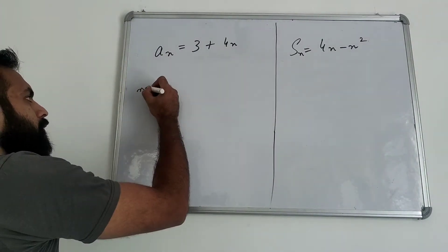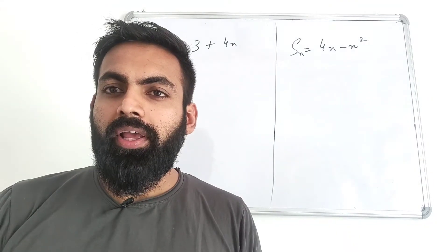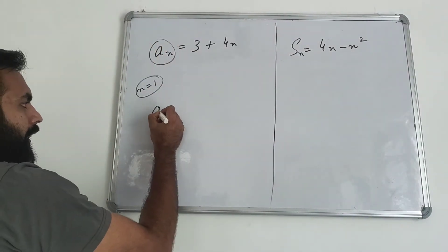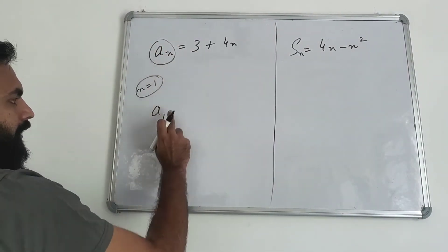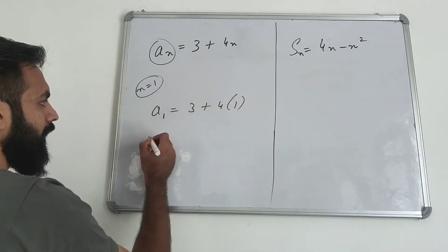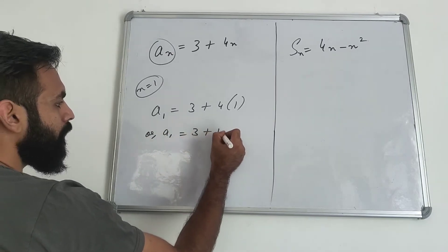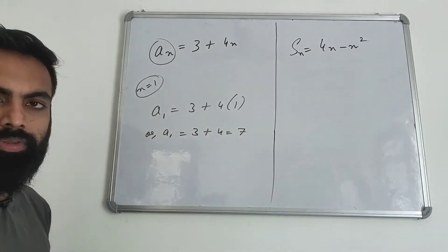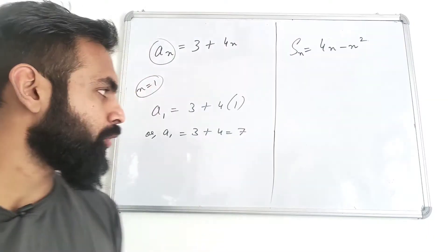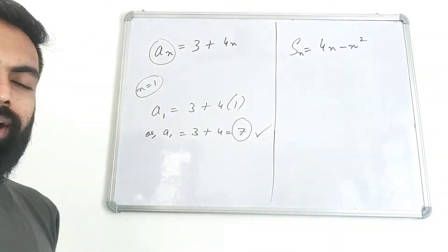You will put n value 1. If you put n value 1, you get A1 equals 3 plus 4 into 1, that is 7. This is actually the first term A, so AP's first term is 7.